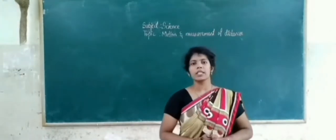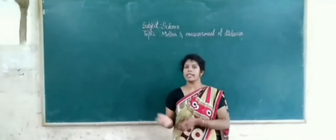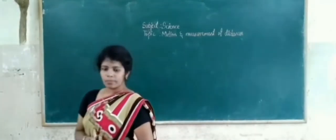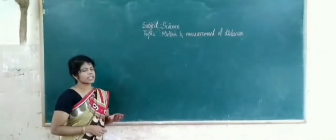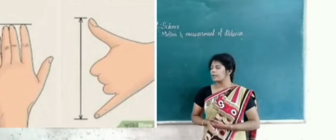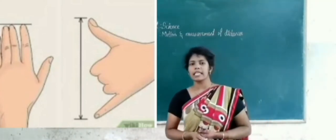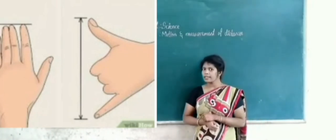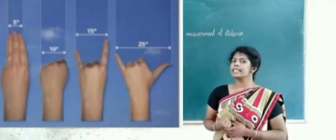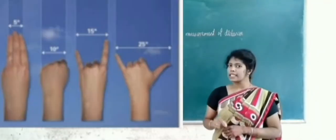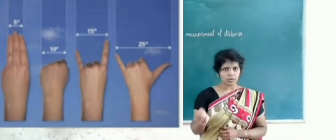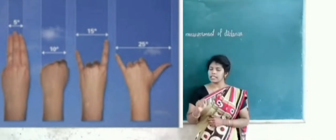We learned how older people used transportation systems and what means of transport are used nowadays. We also learned how old people started measuring distances with the help of hands and footsteps. But is that distance accurate? No, that distance is not accurate, because every person's hands and footsteps are different from each other. Still, some participants use the same method to measure.